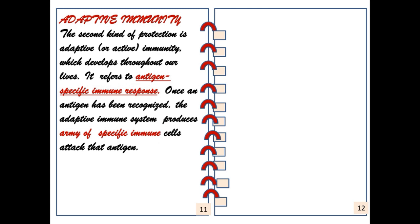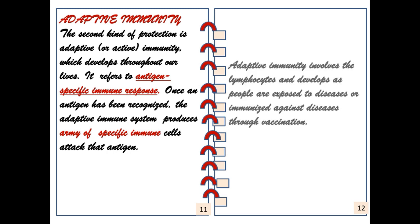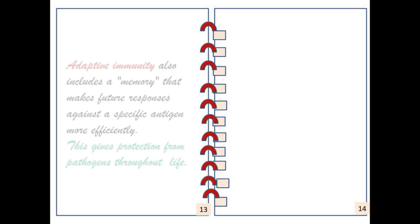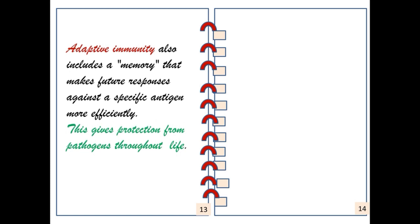Adaptive immunity is a second kind of protection which develops throughout our life. It refers to antigen-specific immune response. Once an antigen has been recognized, the adaptive immune response produces an army of specific immune cells that attack the antigens. Adaptive immunity involves lymphocytes and develops as people are exposed to diseases or immunized through vaccination. It also includes a memory that makes future responses against a specific antigen more efficient, giving protection from pathogens throughout life.